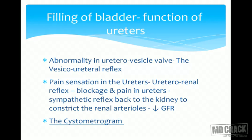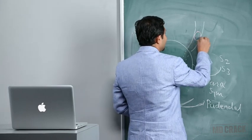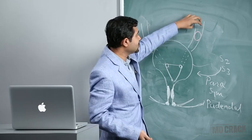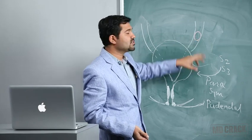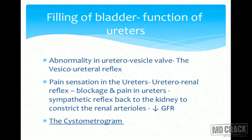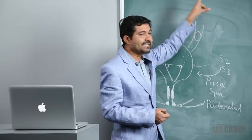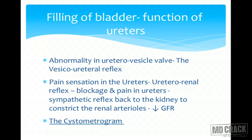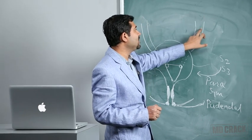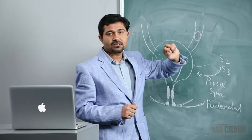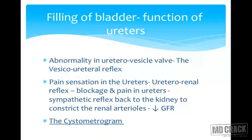If there is a stone causing obstruction, strong parasympathetic-driven peristalsis aims to expel the stone, but if the ureter cannot overcome the obstruction, a ureterorenal reflex is generated. This reflex causes sympathetic stimulation that decreases GFR. With decreased GFR, the amount of urine formed is less, reducing the backward pressure — that is the importance of the ureterorenal reflex.